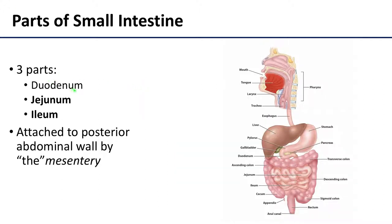There are three parts of the small intestine. The most proximal portion is the duodenum — it's also the shortest part — as well as the jejunum and the ileum, and that's what we're going to be focusing on in this particular presentation.